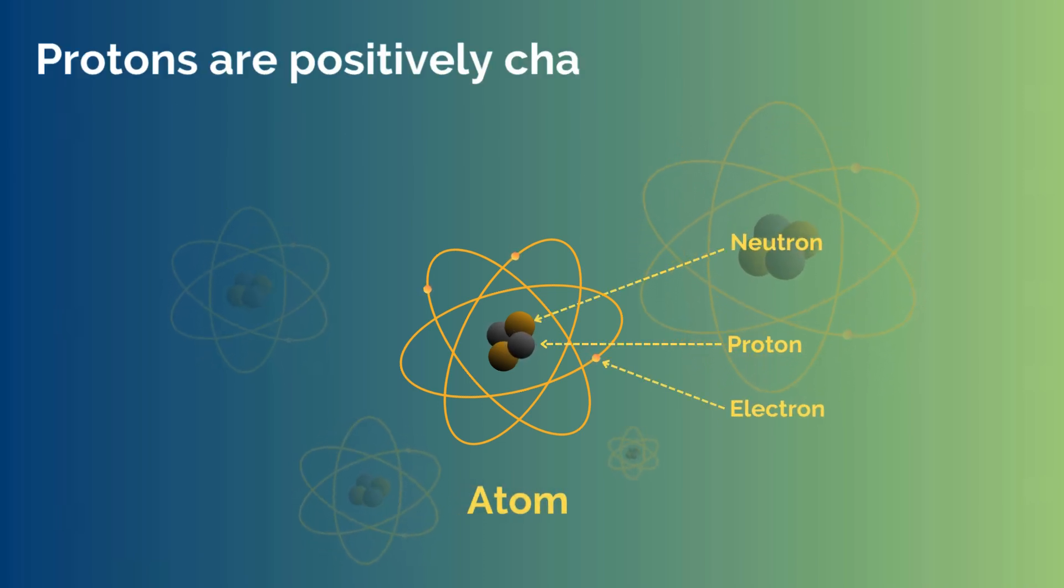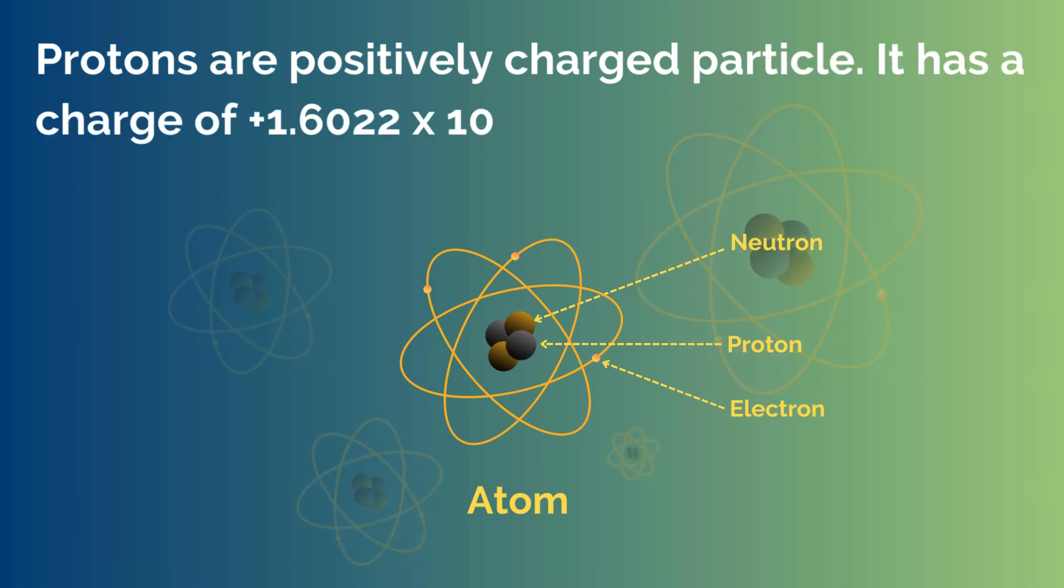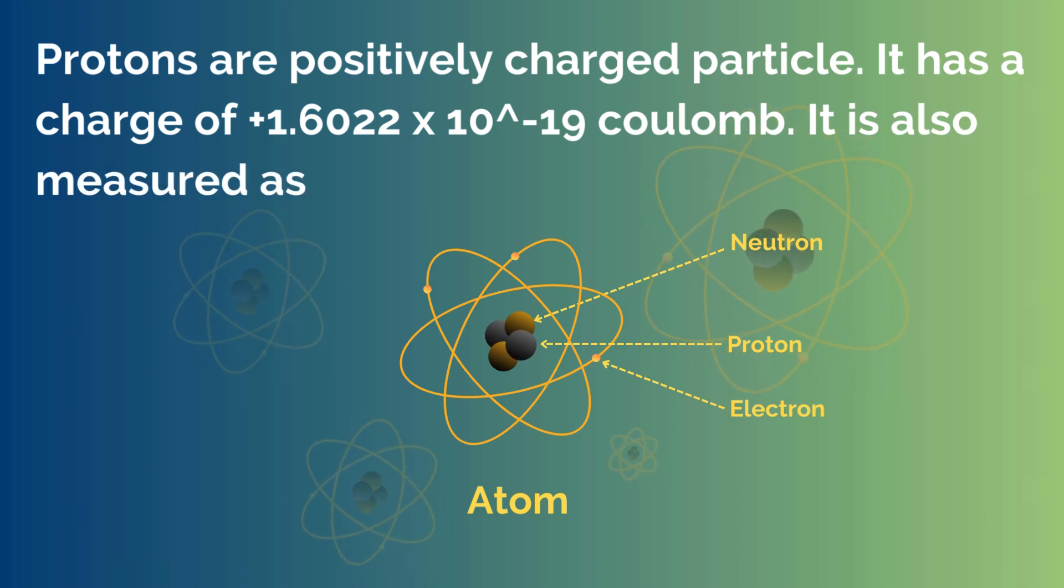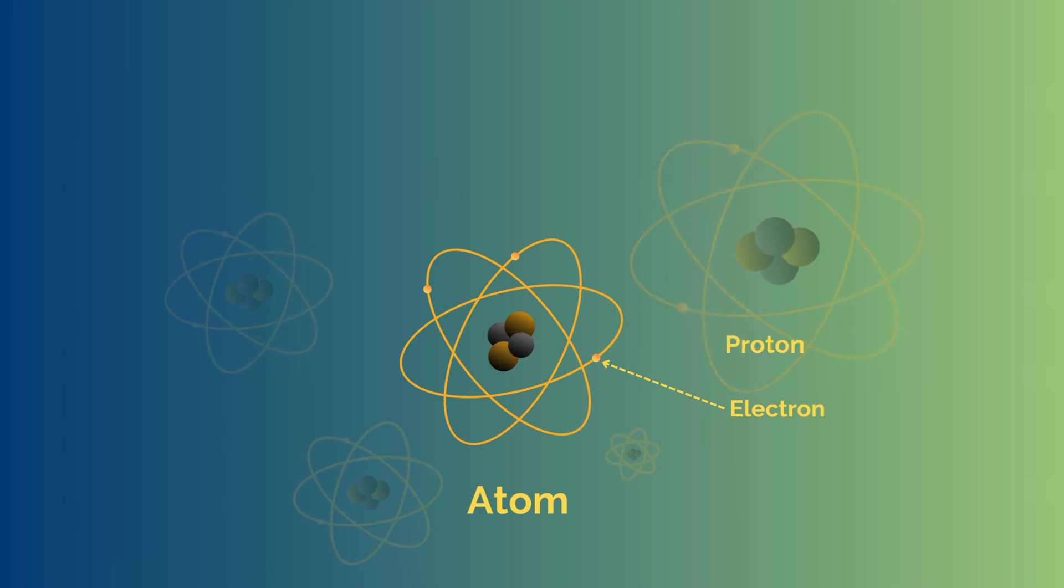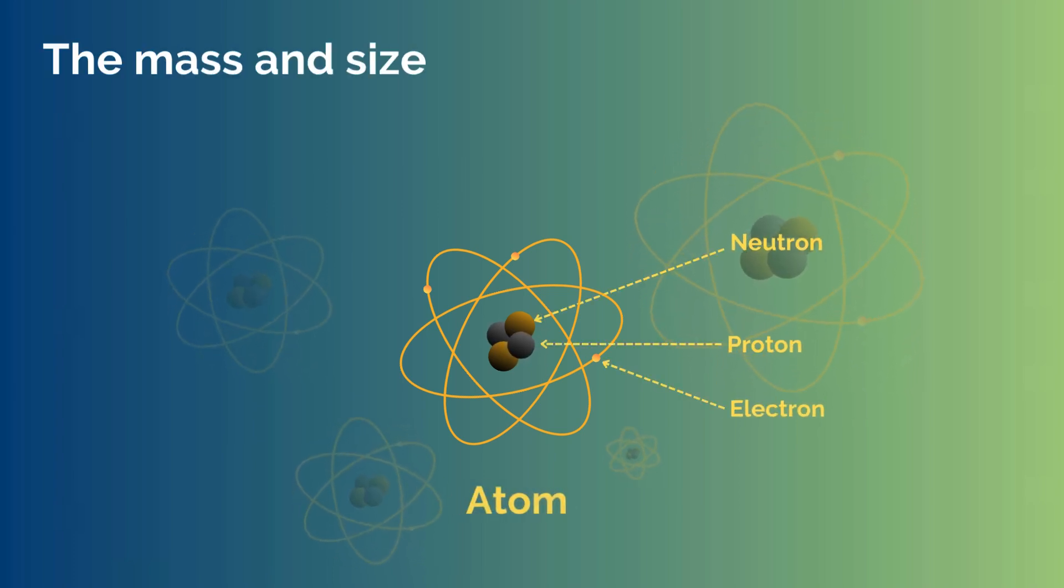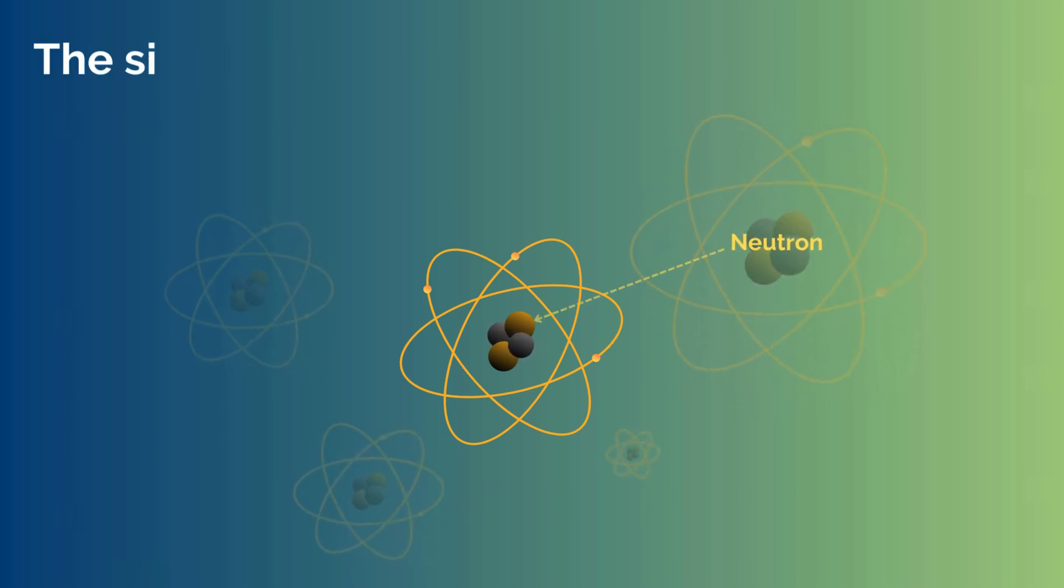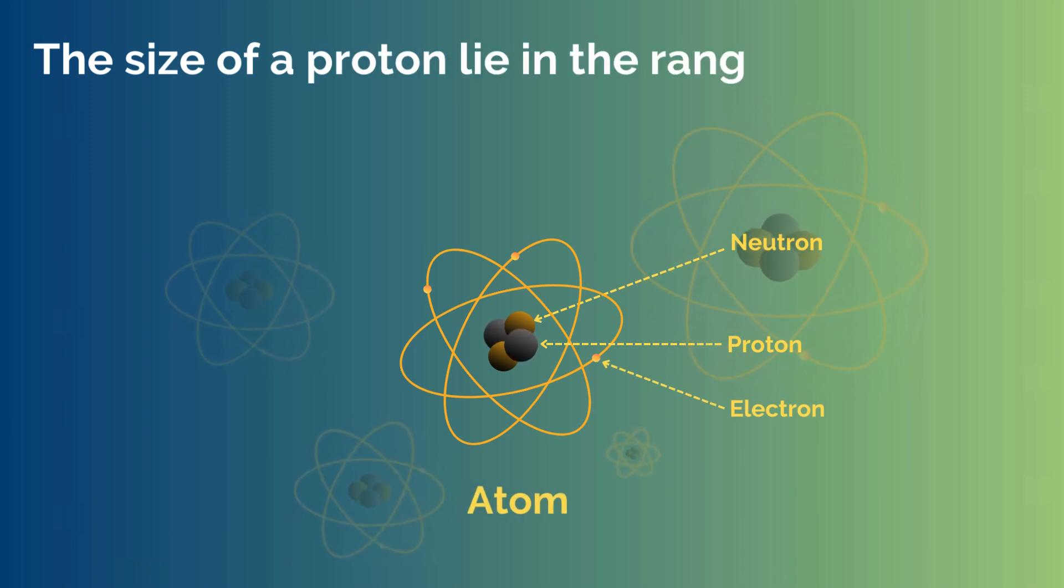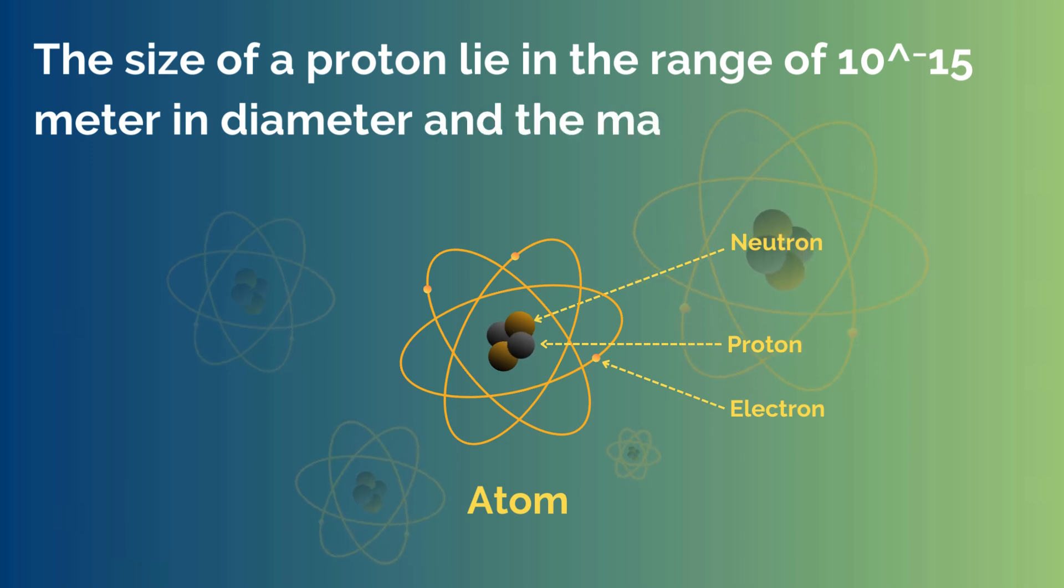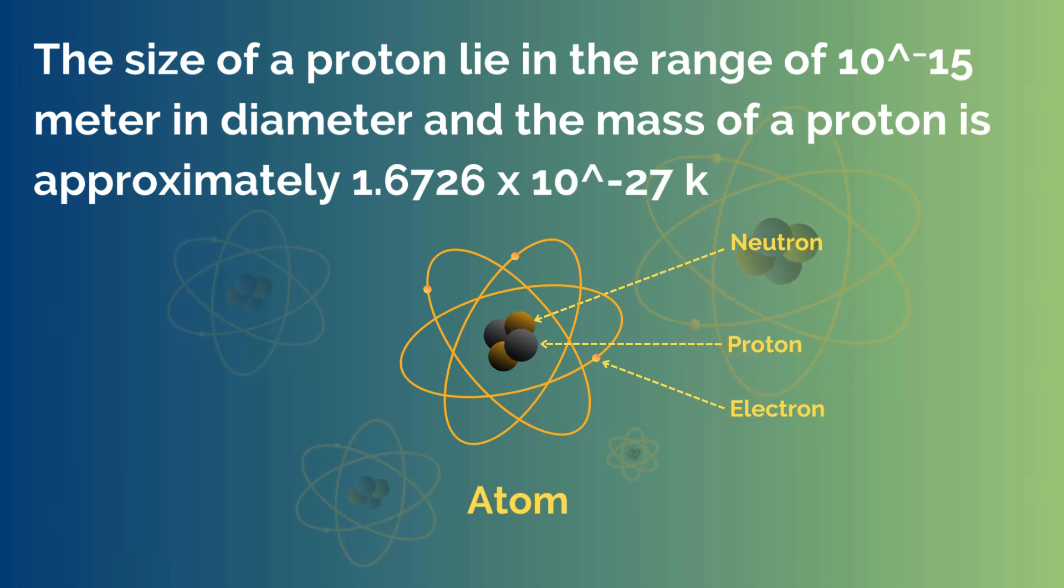Protons are positively charged particles. It has a charge of plus 1.6 times 10 to the power of minus 19 Coulombs. It is also measured as plus 1 unit charge. The mass and size of a proton is also very small. The size of a proton lies in the range of 10 to the power of minus 15 meters in diameter. And the mass of a proton is approximately 1.6 times 10 to the power of minus 27 kilograms.